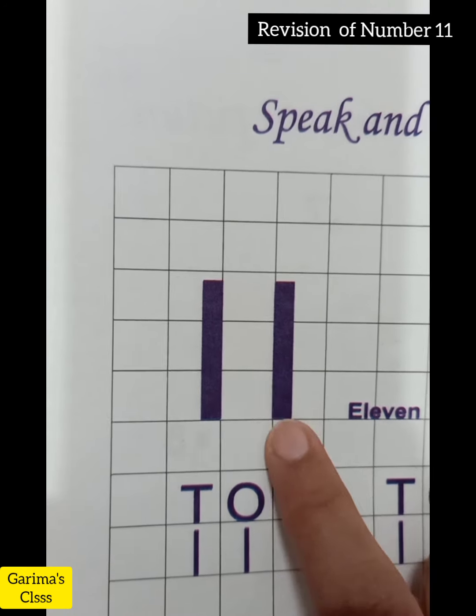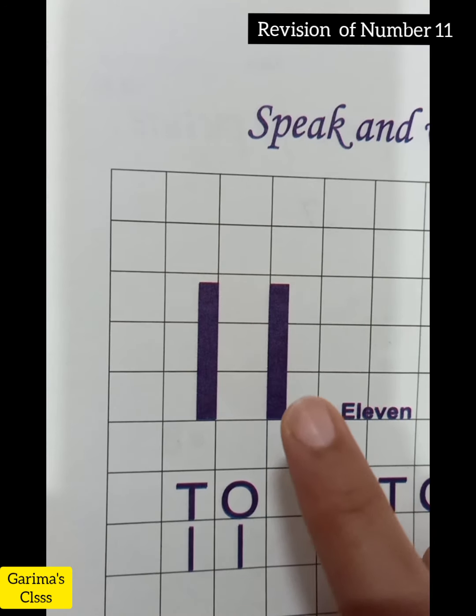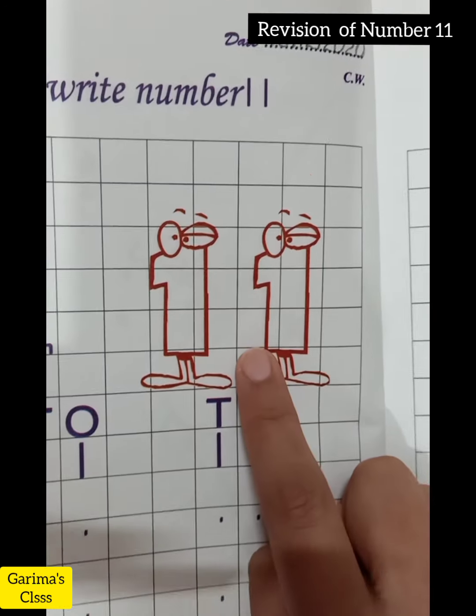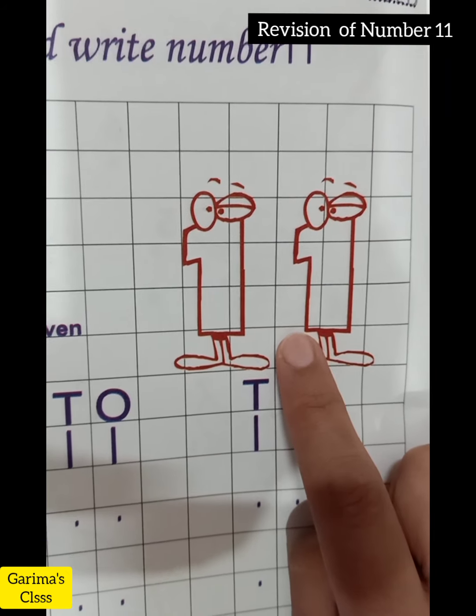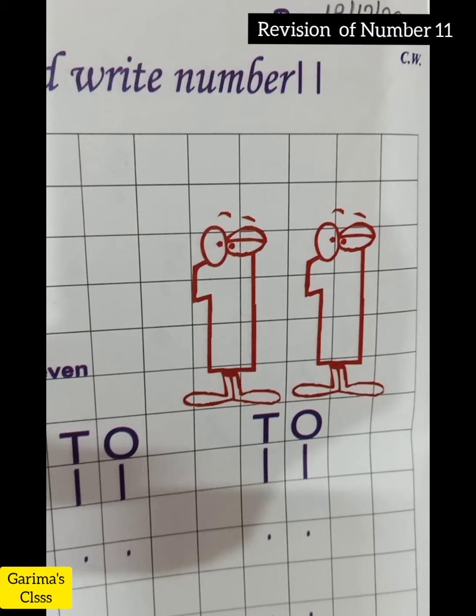Tell me, which number is this? This is number 11. Kids, look. Aap deekh rahein. Here, rainbow writing me number 11. Aapko is this coloring. Okay, kids. Let's color with me.